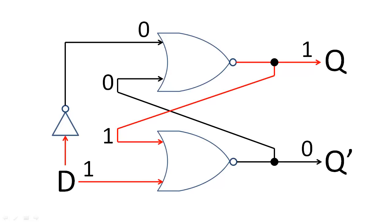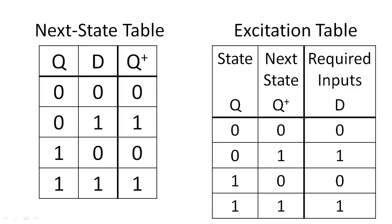We can describe the D latch's behavior with the same tables as before. Notice that the next state is always the same as the data input. Much simpler.